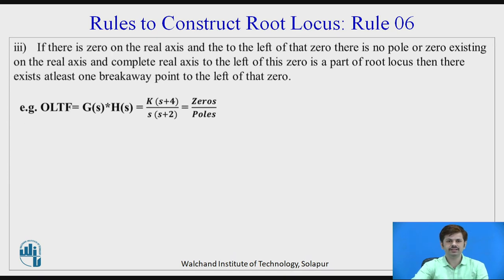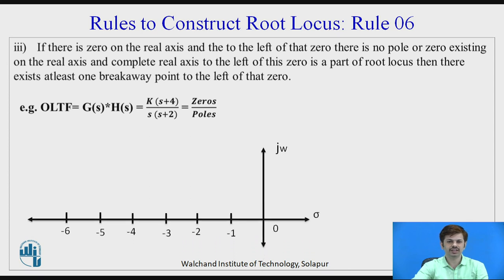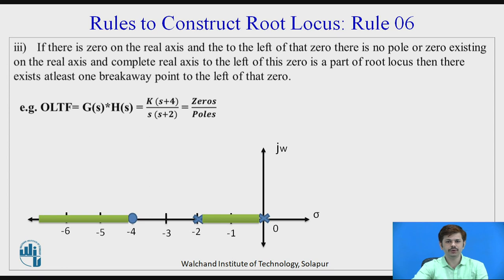Third, if there is a zero on the real axis and to the left of that zero there is no pole or zero existing on the real axis, and the complete real axis to the left of this zero is a part of root locus, then there exists minimum one breakaway point to the left of that zero. For this, the open loop transfer function is K(s+4) divided by s(s+2). The root locus exists between zero and minus two, and from minus four to infinity. Applying this third condition, minimum one breakaway point exists to the left of minus four.